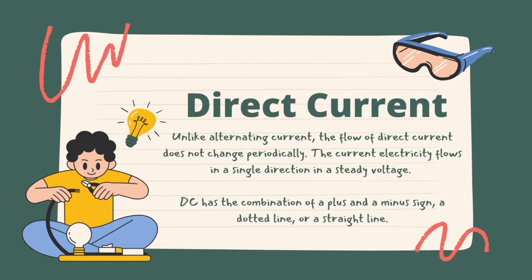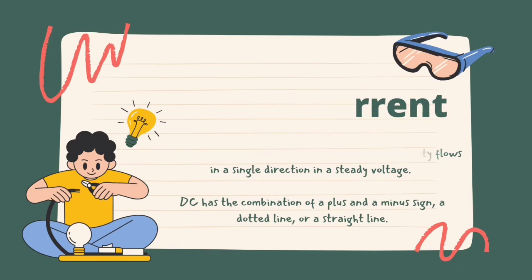Everything that runs on a battery and uses an AC adapter while plugging into a wall, or a USB cable for power, relies on DC. Examples would be cell phones, electric vehicles, flashlights, and flat screen TVs. AC goes into the TV and then it is converted to DC.